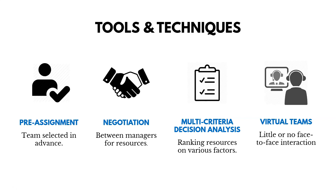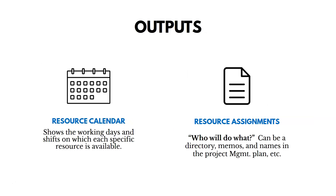Here are some key outputs of the acquire resources process. You're going to have a resource calendar, which shows working days and shifts when resources are available — important if you have resources in China who won't be working during Chinese New Year, for example. You'll also have resource assignments, which tell you who will do what, and can be a directory, memos, names, and so on in the project management plan.